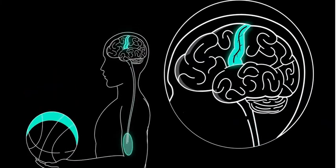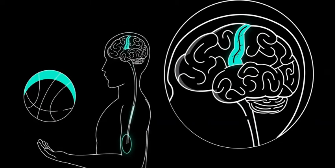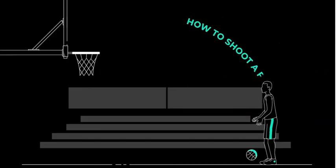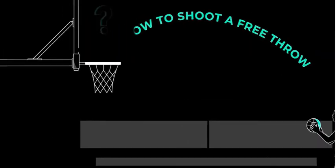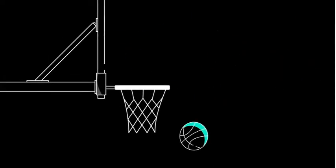These are functional pathways, neurons working together to achieve a goal. Say you're learning how to shoot a free throw. If it's your first time doing it, you don't yet have a pathway for that movement in your brain. You need to create it.